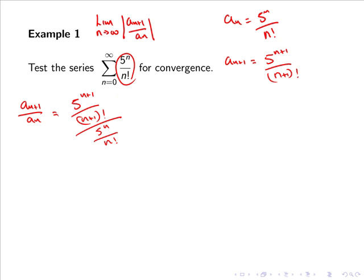And as division is simply the opposite of multiplication, we can rewrite this more tidily as 5 to the n+1 divided by n+1 factorial, all over 5 to the n.